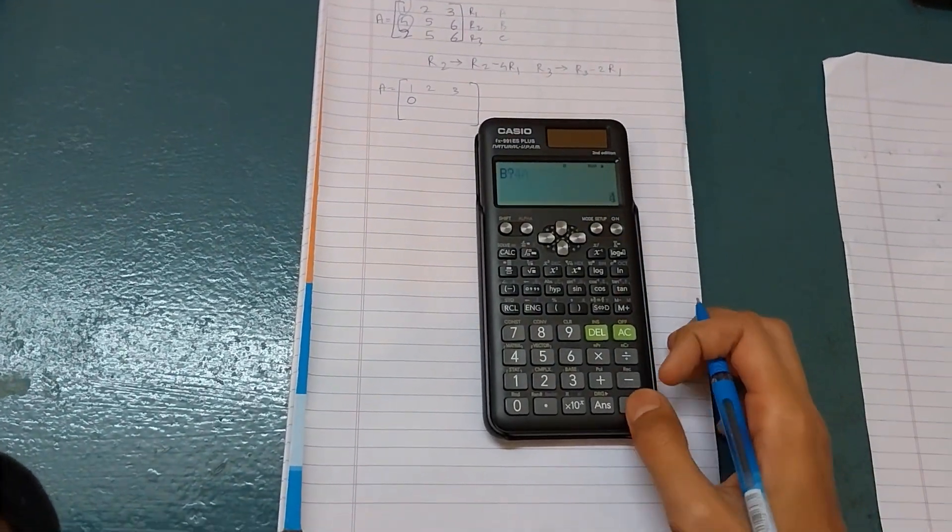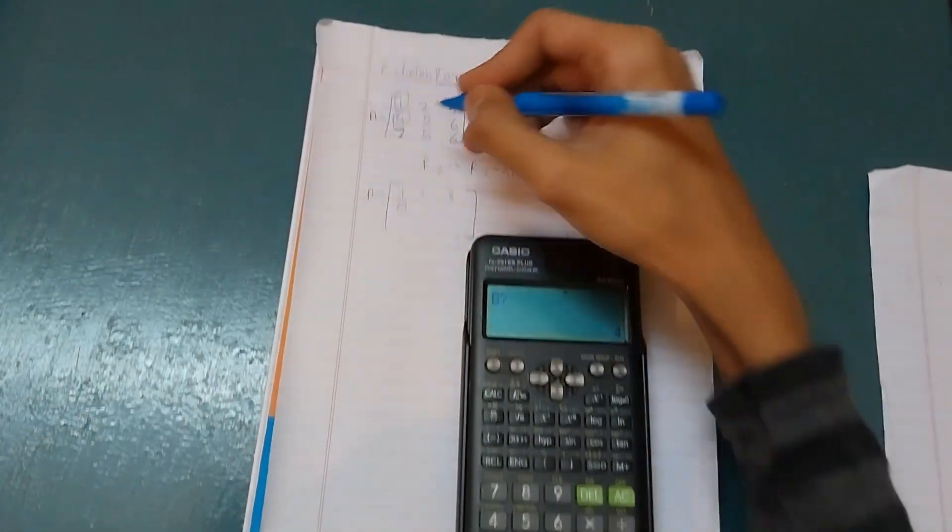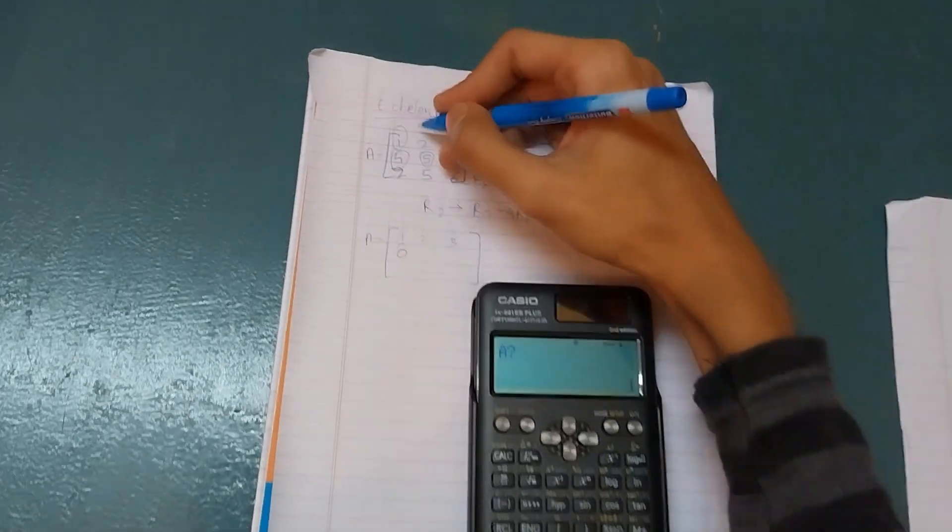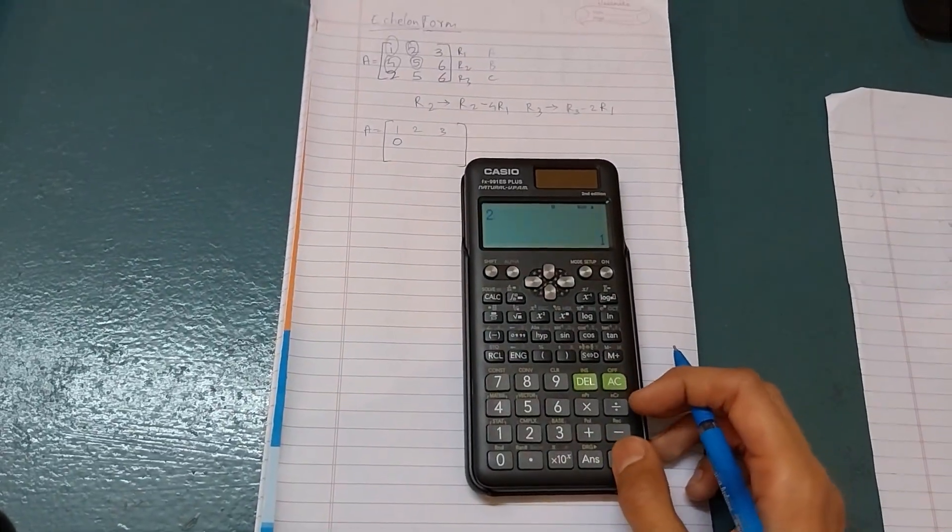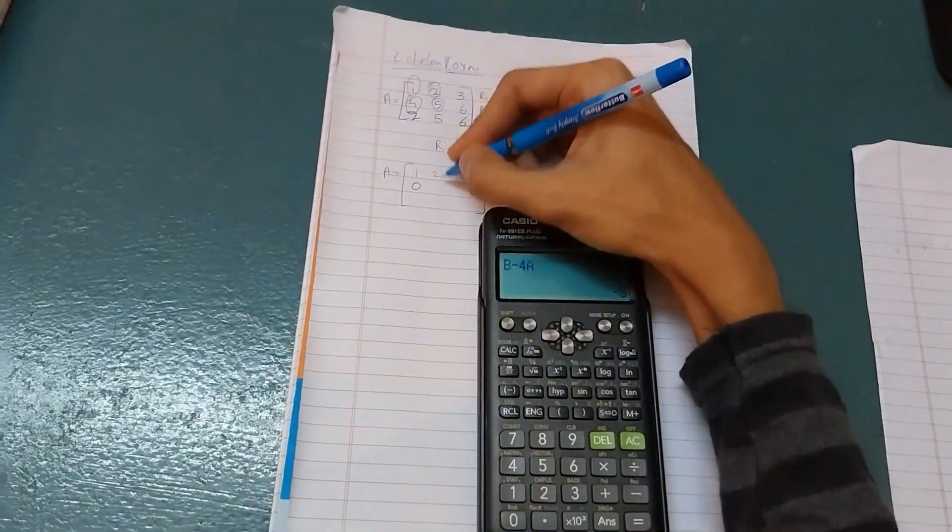Then press equals once again. It will ask for B value, so B value is 5. Write it as 5. And A value is 2. So write it as 2. It will be minus 3.